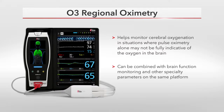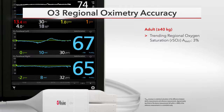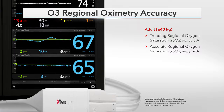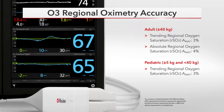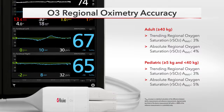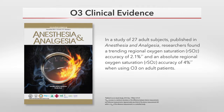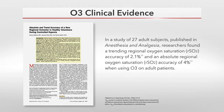O3 can be combined with SED-Line Brain Function Monitoring and Advanced Rainbow Parameters on the same platform. Specifications for the O3 Adult Sensor include a trending regional oxygen saturation accuracy of 3% and an absolute regional oxygen saturation accuracy of 4%. Specifications for the O3 Pediatric Sensor include a trending accuracy of 3% and an absolute accuracy of 5%. In a study of 27 adult subjects published in Anesthesia and Analgesia, researchers found a trending RSO2 accuracy of 2.1% and an absolute RSO2 accuracy of 4% when using O3 on adult patients.